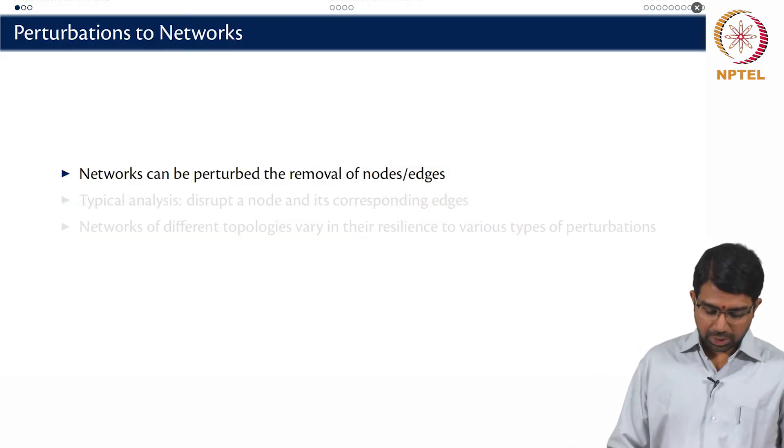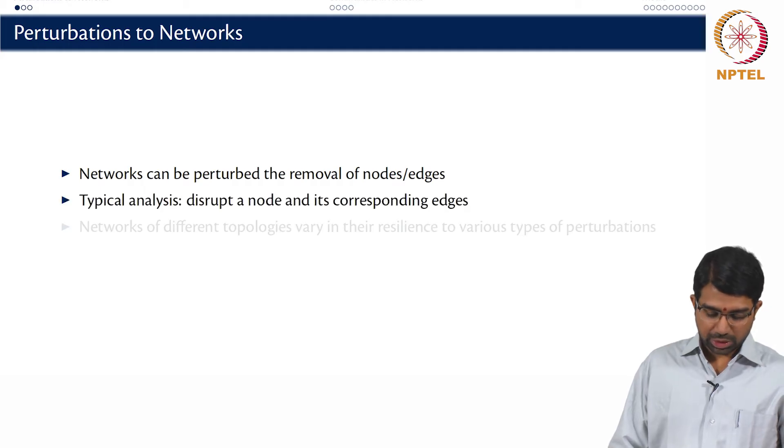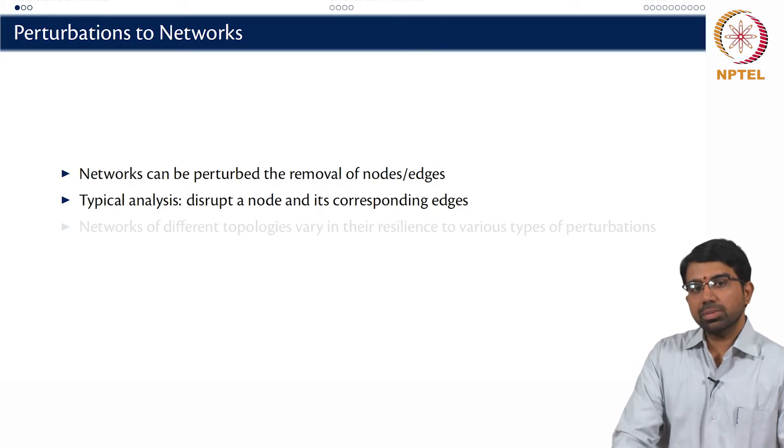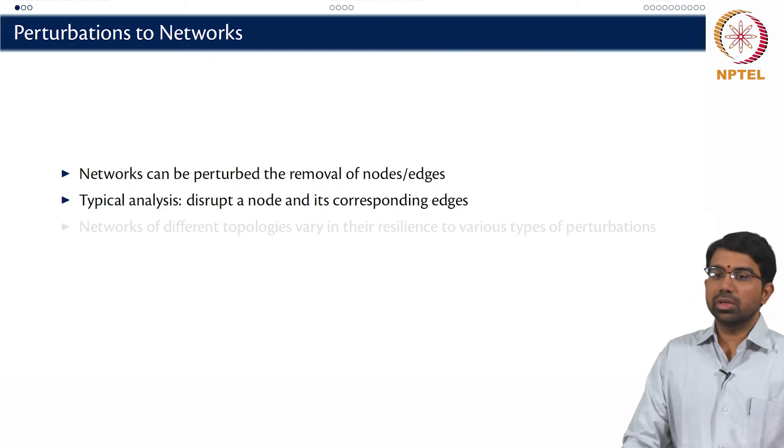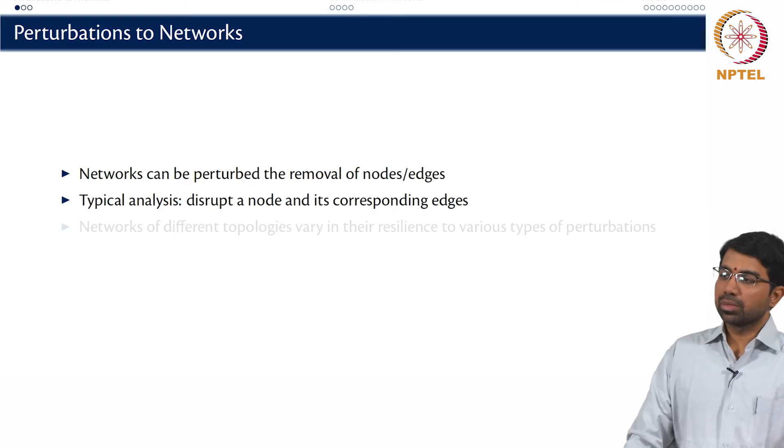So we can perturb a network by removing nodes or edges or disrupt a node and all its corresponding edges. But networks of different types will basically behave differently when you start perturbing it. What about addition of nodes? You can add nodes but in general we study the perturbation to removal.